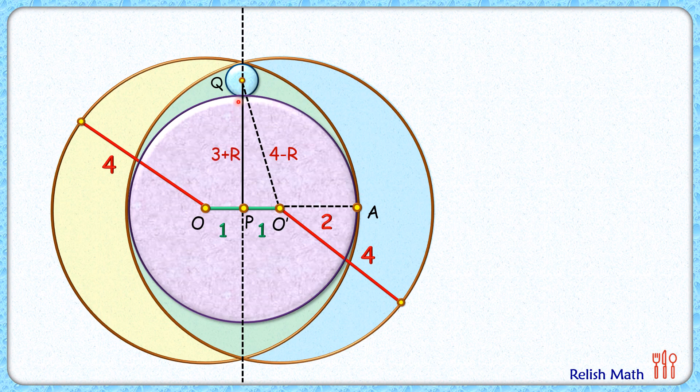Now in this triangle QPO, this angle P, by symmetry, will be 90 degrees. By symmetry, these two angles will be equal, and thus this angle P is 90 degrees. Now in this triangle QPO, applying Pythagoras theorem, we'll get (4 minus R) squared is (3 plus R) squared plus 1 squared.